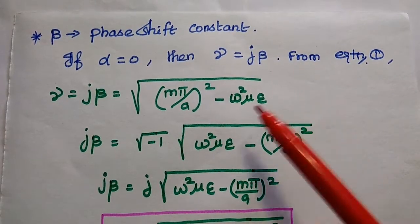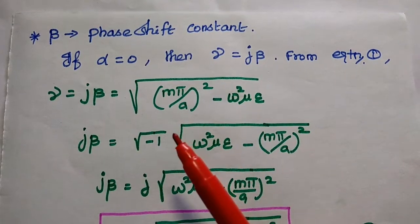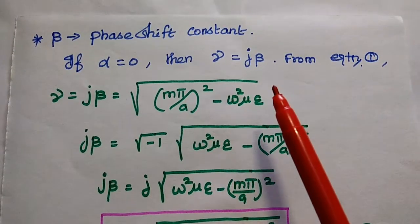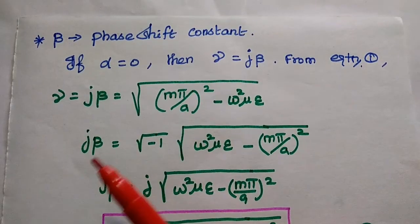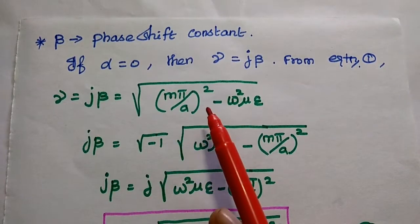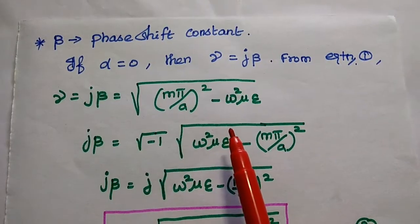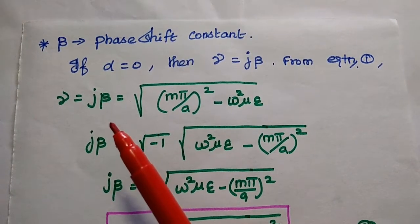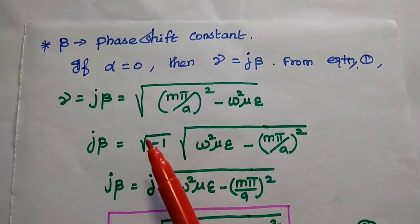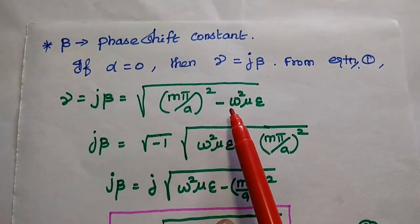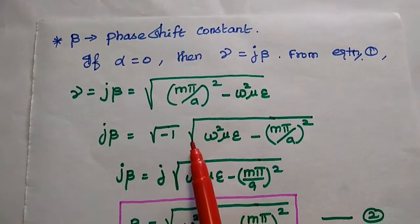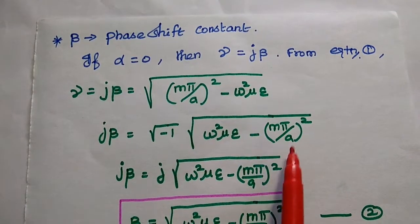Next, we are going to find out the phase shift constant. During the wave propagation, α = 0, then γ = jβ. From the first equation, we can write jβ = √((mπ/a)² − ω²με). Here we can take the minus as common from the square root — taking √(−1) — so this term becomes plus and this term becomes minus, giving √(−1) × √(ω²με − (mπ/a)²).